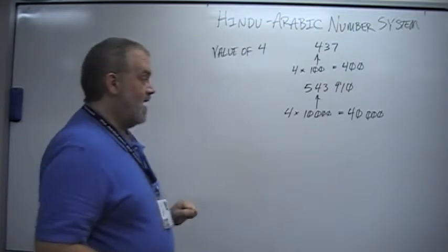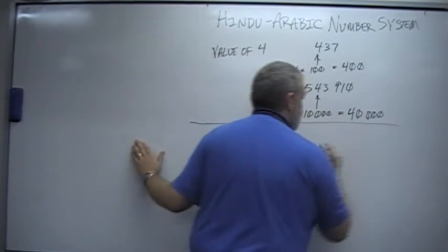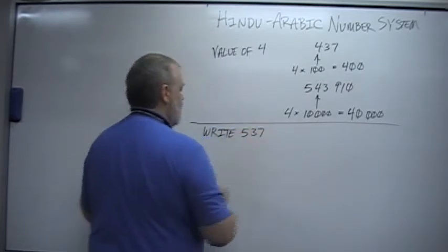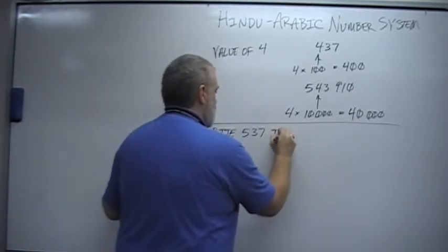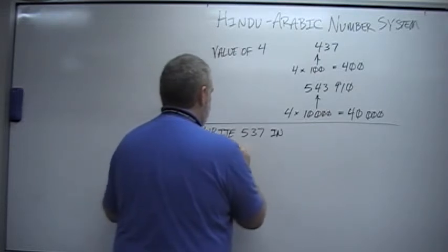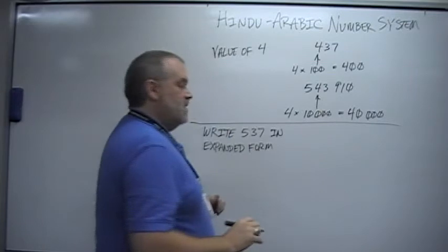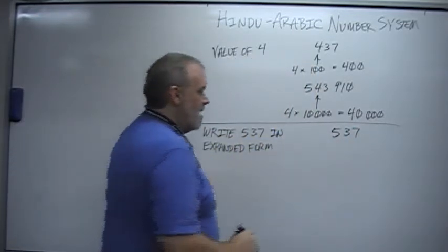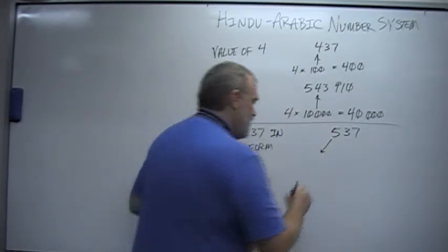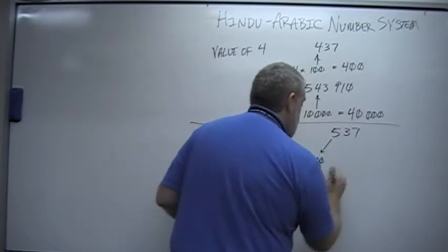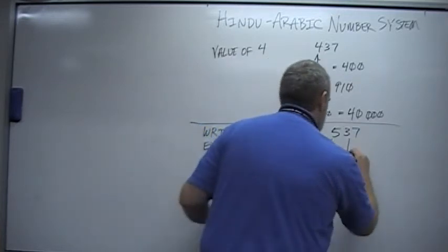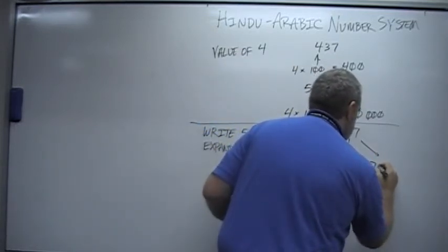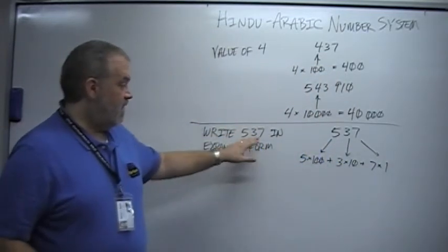Now, you want to make sure you have that idea down. The other one that we're going to do is we're going to take a number, 537, and we want to write 537 in expanded form. We'll start by writing the number down, and we're going to go through each digit one at a time. The 5 is in the hundreds place, so 5 times 100 plus. Go on to the next digit. The 3 is in the tens place, so 3 times 10 plus. And the 7 is in the ones place, so 7 times 1. And that's writing 537 in expanded form.